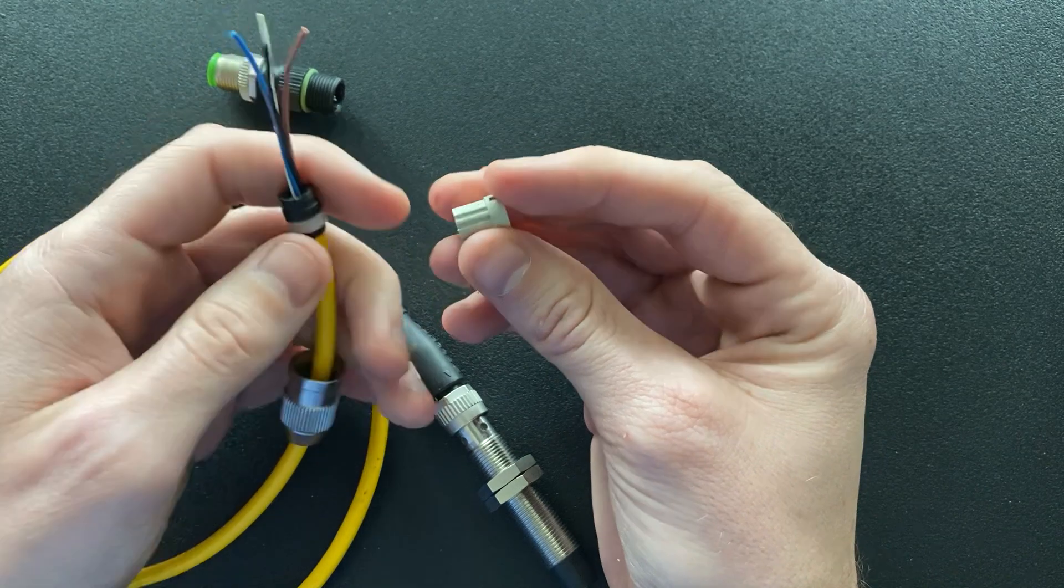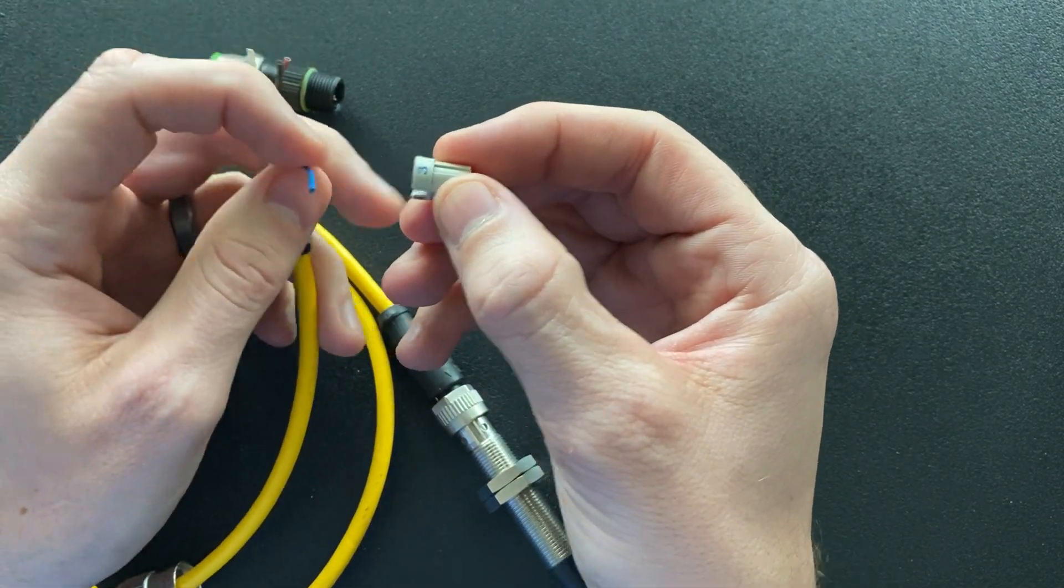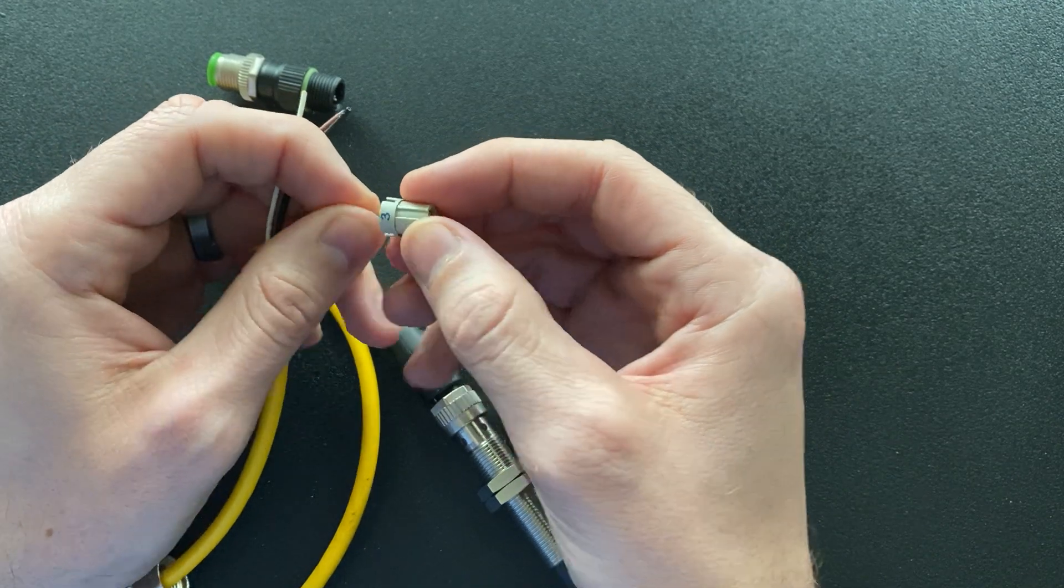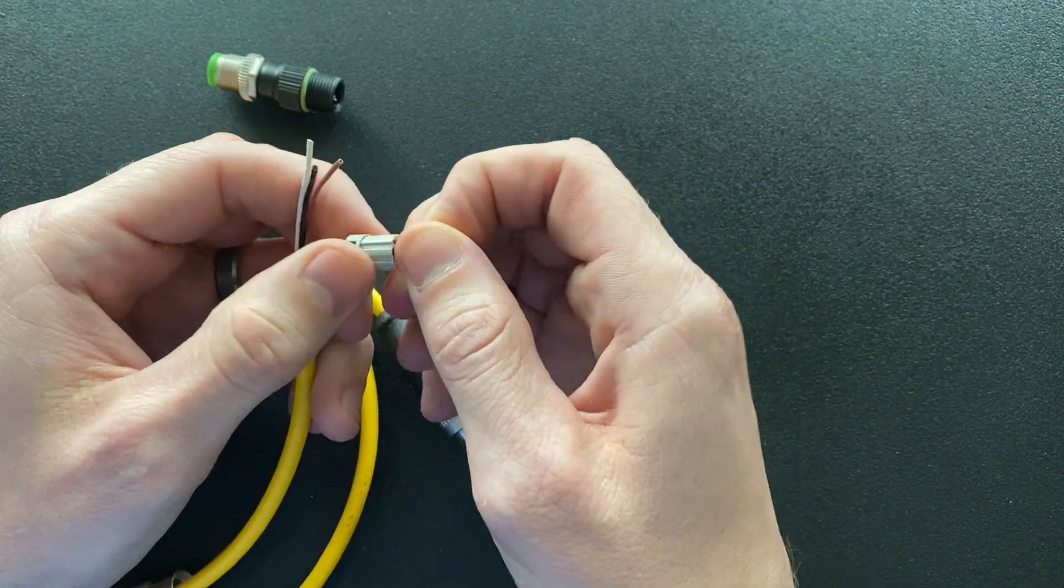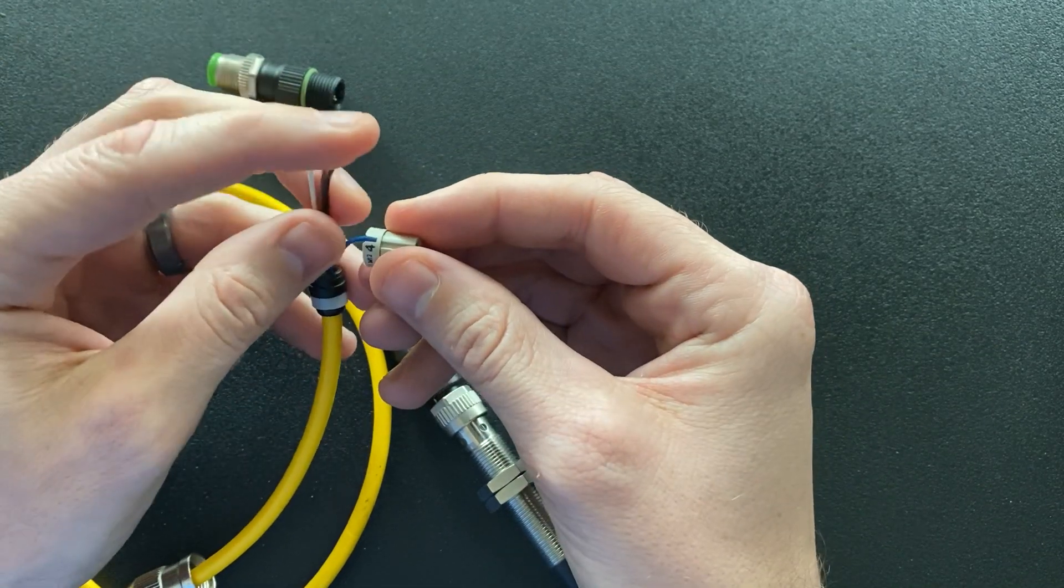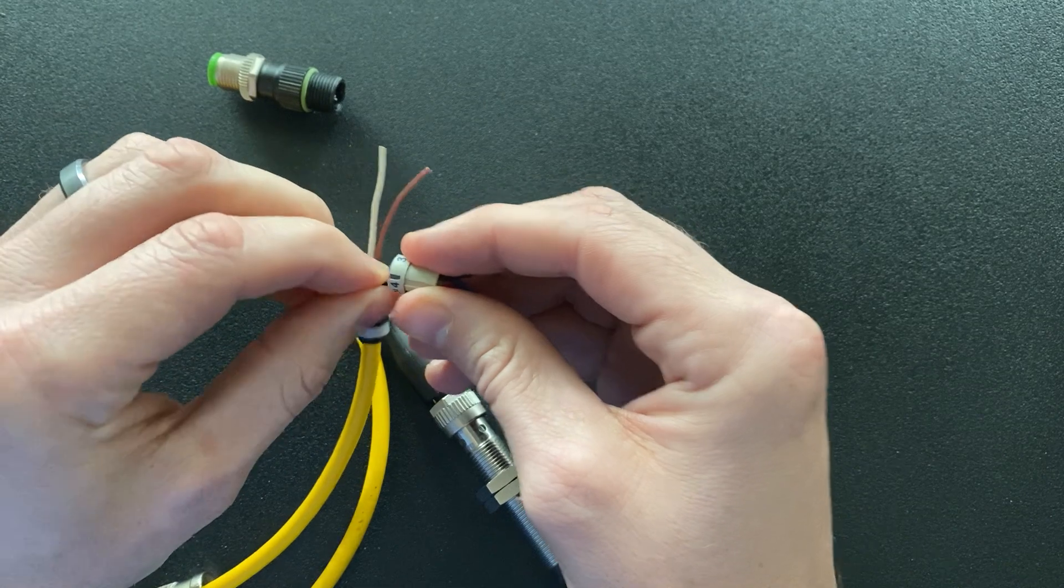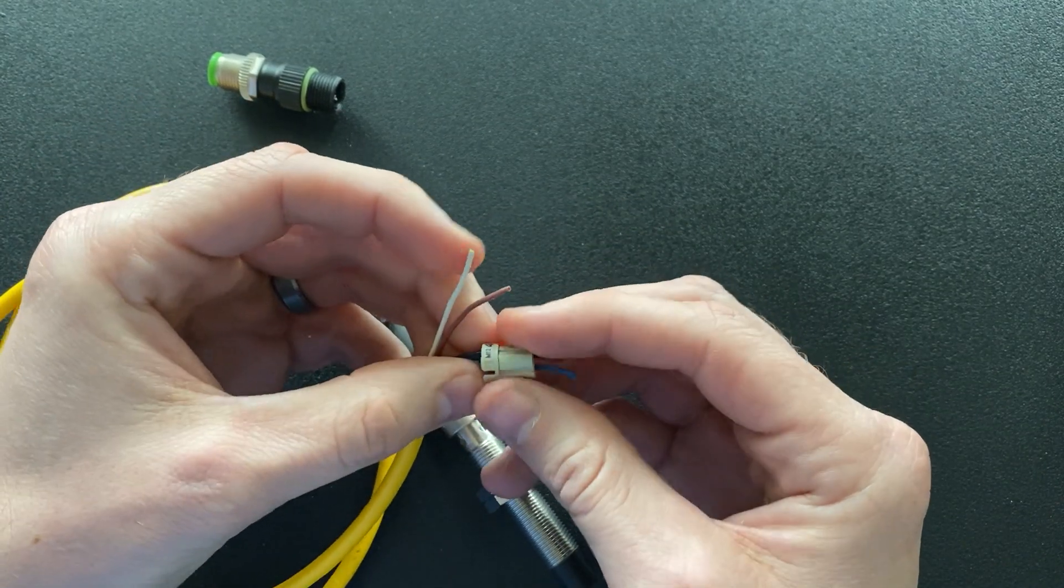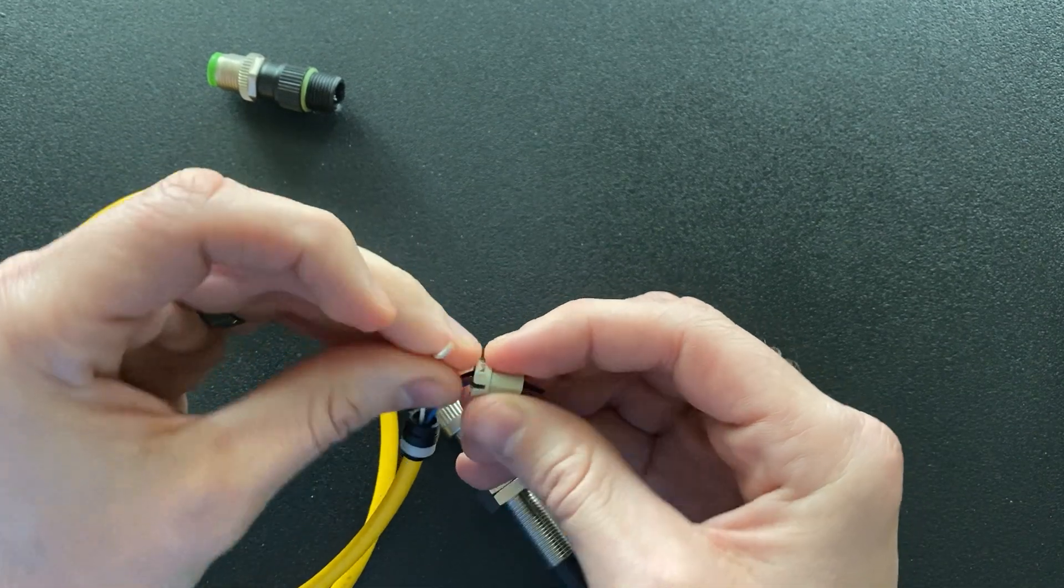What you're going to do is take this and slide it over. For instance, number three is blue—take the blue conductor and slide it through to the other side. This one is black, slide that through. Then brown, and finally the white.